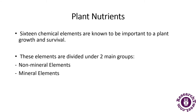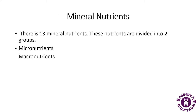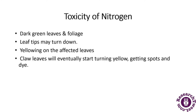There are 16 chemical elements that are known to be very important to plant growth and survival. These elements are divided into two main groups: non-mineral elements and mineral elements. The non-mineral elements are carbon, hydrogen, and oxygen, found in air and water. There are about 13 mineral nutrients, divided into two groups: micronutrients and macronutrients.